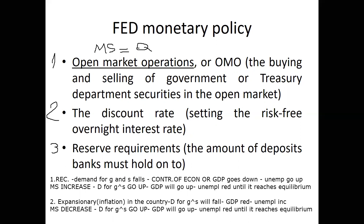The third tool is reserve requirements — the amount of deposits the banks must hold in reserve. As the required reserve ratio increases, the amount of money available for loans is reduced. Conversely, a reduction in the reserve requirement increases the amount of money available. If 20% is the required reserve ratio, then 80% of deposits is available for lending. As it increases from 20% to 30%, the availability of money in the market decreases. Most countries use open market operations as their primary monetary tool.